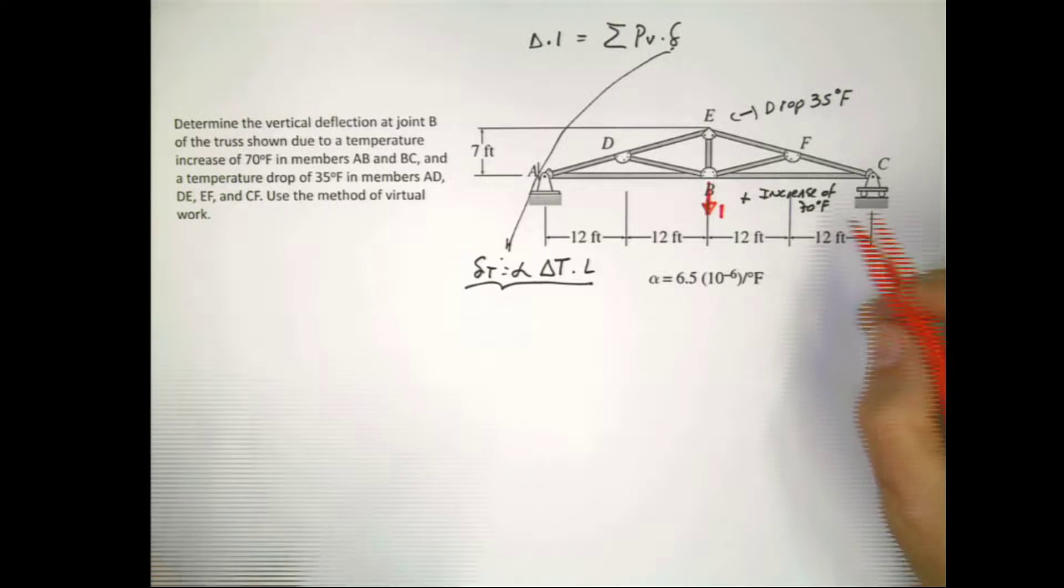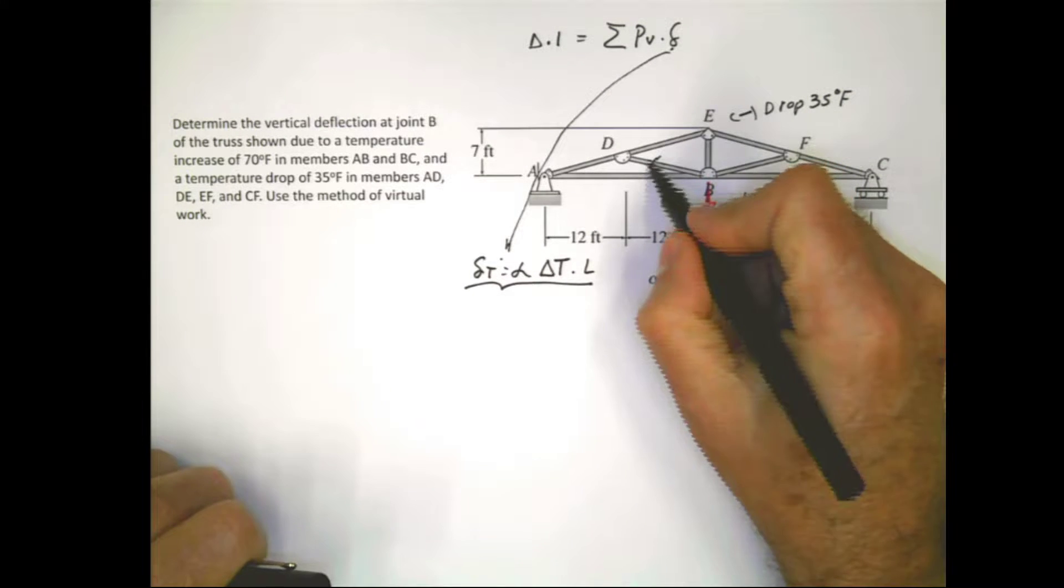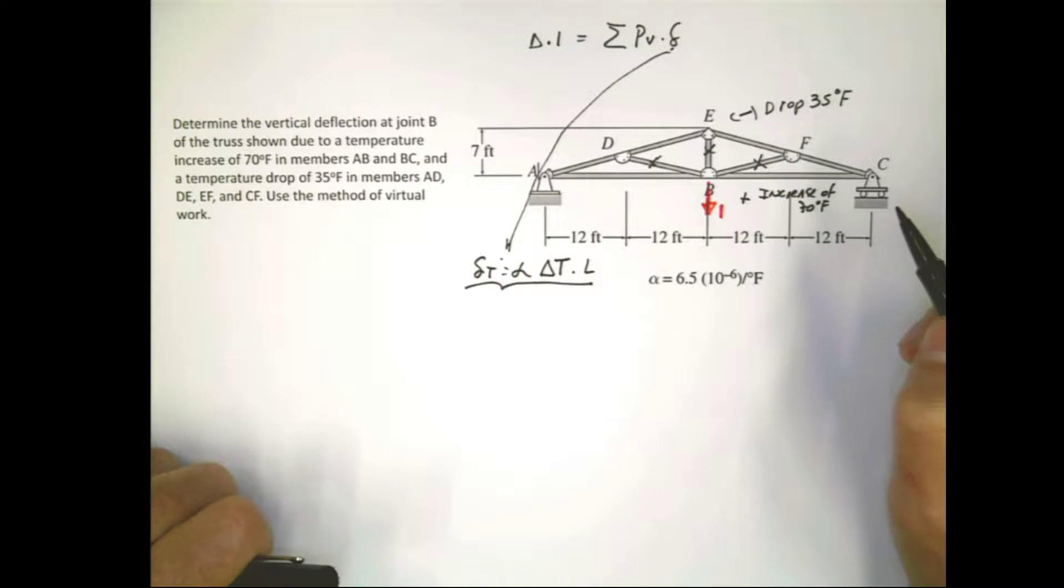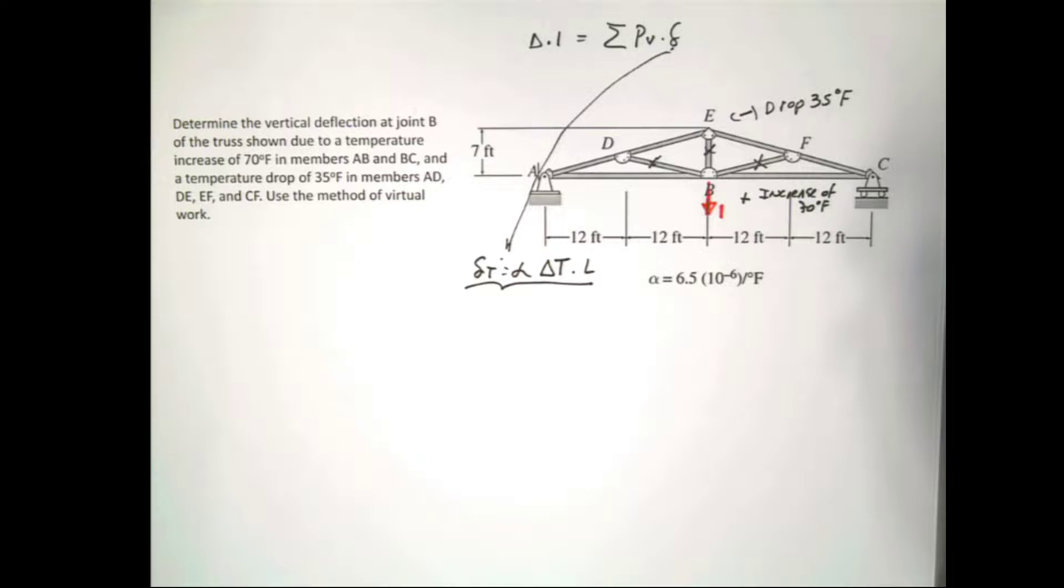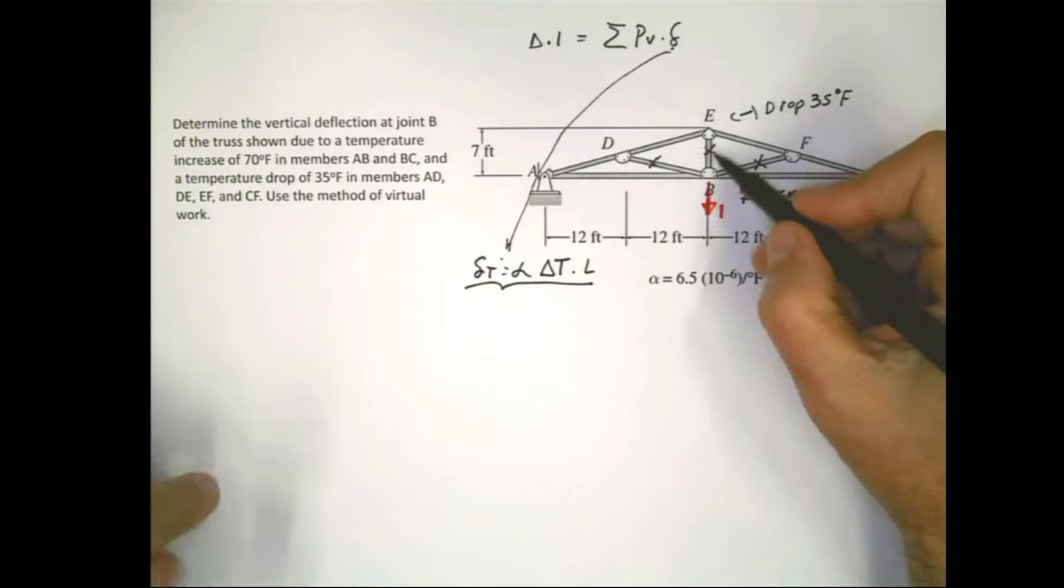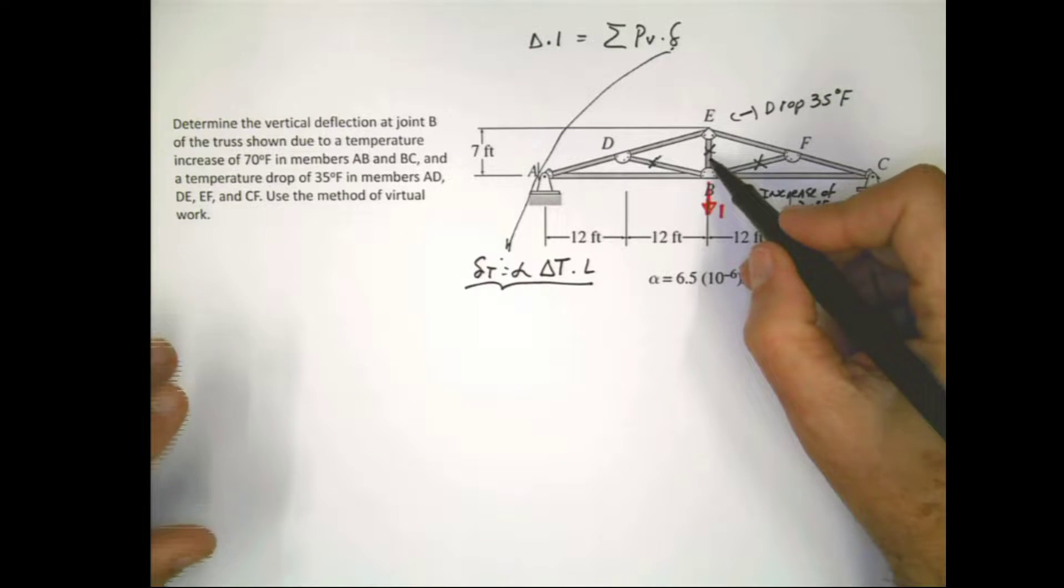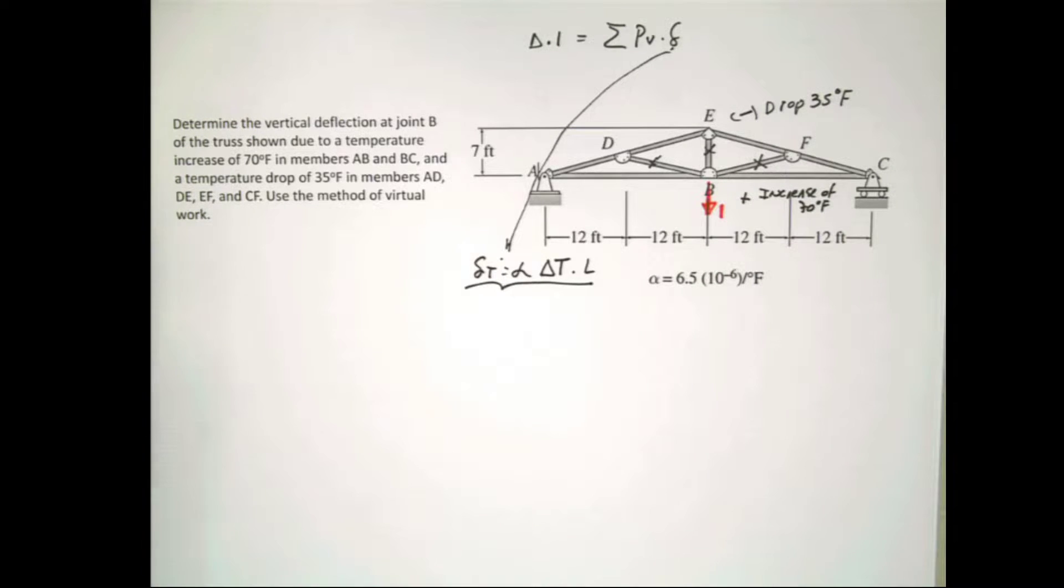Now, if we do that, remember, I am not interested in these members. This member I don't care, I don't care, I don't care. Because the only thing that I care about is when I do the multiplication, these are not going to have any deformation due to temperature. So these members, I can calculate the values if I want to, the virtual values, but I really don't need them. But I need this and I need that.